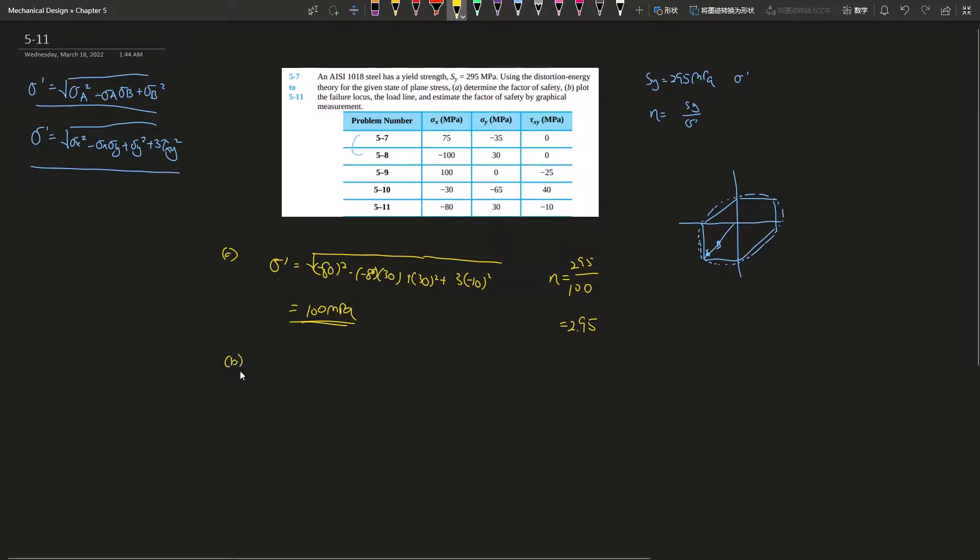The transformation equation for principal stress is: σ_{a,b} equals (σ_x + σ_y) / 2 plus or minus the square root of ((σ_x - σ_y) / 2)² plus τ_xy².